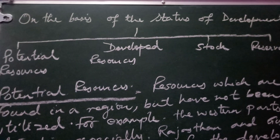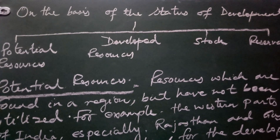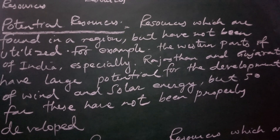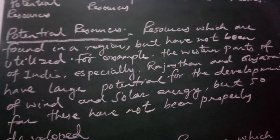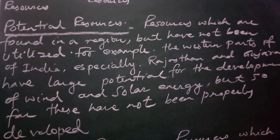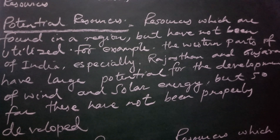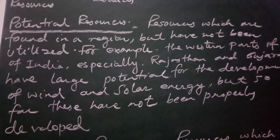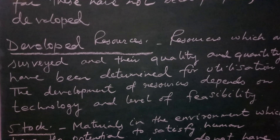Now let us discuss the classification of resources on the basis of status of development. Resources can be classified as potential resources, developed resources, stock and reserves. Potential resources are those which are found in a region but have not been utilized. For example, the western parts of India — especially Rajasthan and Gujarat — have large potential for the development of wind and solar energy, but they are not being properly used because they are not properly developed.